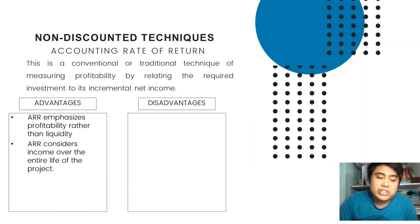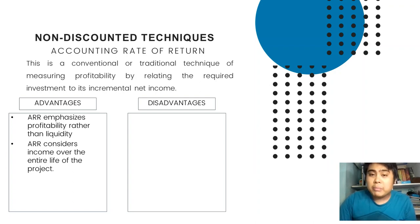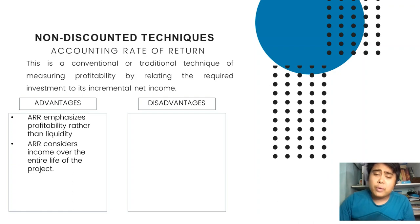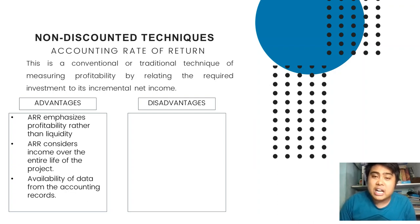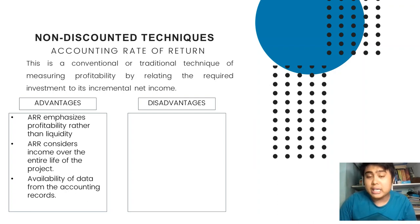The second advantage is that ARR considers income over the entire life of the project. You will notice later that some techniques do not use all the information from the project. ARR, however, considers everything from day zero until the end of the project's life. The third advantage is the availability of data from accounting records, since ARR uses accrual basis and our accounting books are based on accrual basis, so there is no problem with data availability.